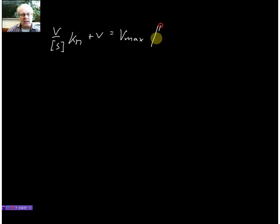So what we can do now is we subtract from both sides V over S times Km. So what we have got on the left hand side is just V and on the right hand side we have Vmax.